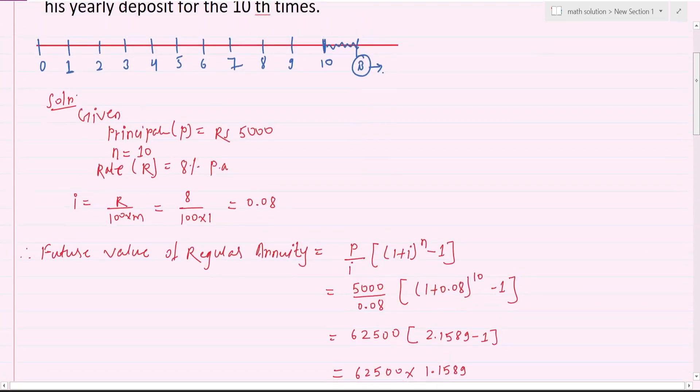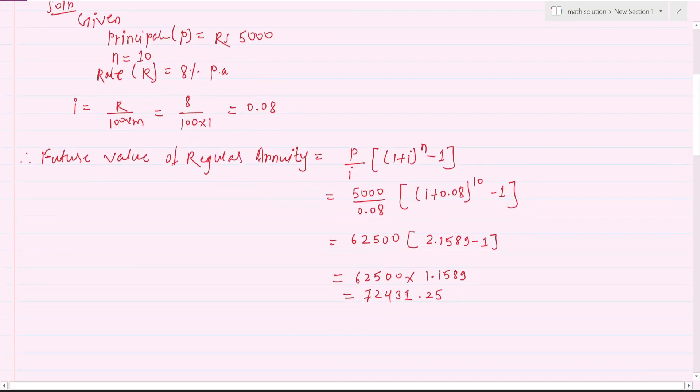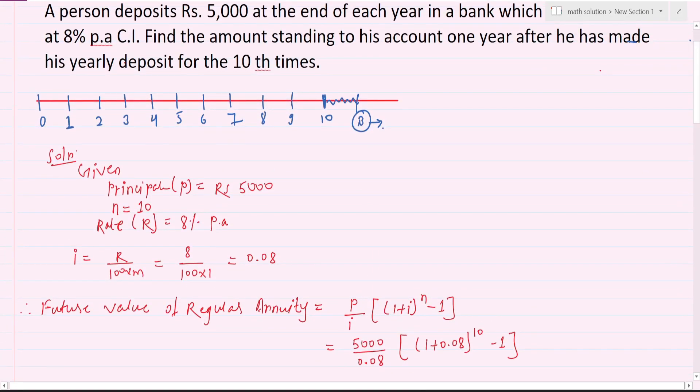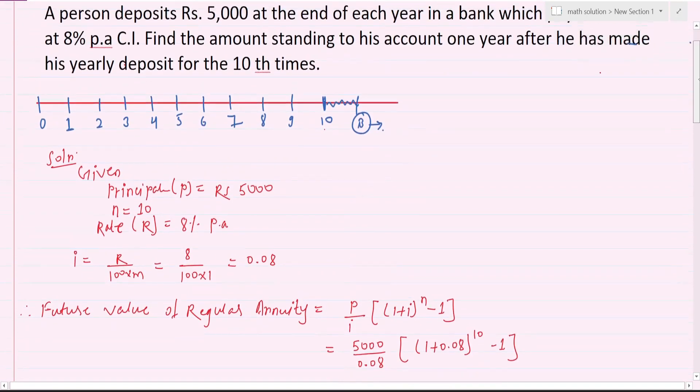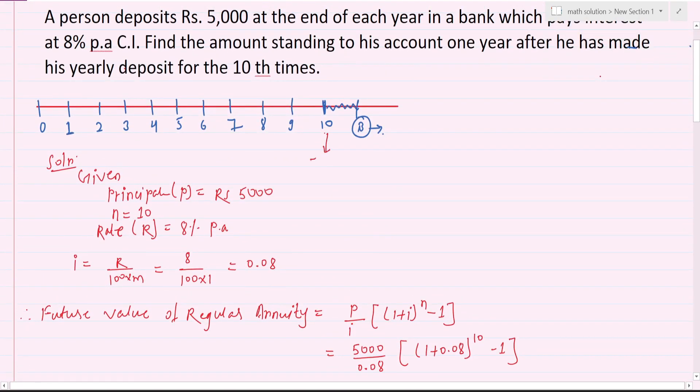The future value of annuity is Rs. 72,431.25. This is the amount after 10 deposits. This is 72,431 after 10 time deposits.